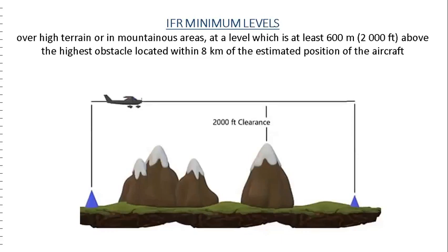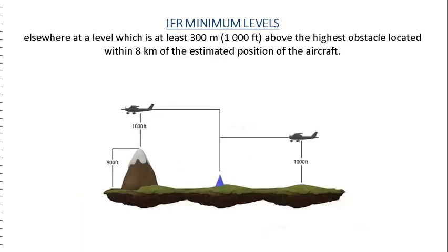IFR minimum levels over high terrain or in mountainous areas require flying at a level which is at least 2,000 feet above the highest obstacle located within 8 kilometers of the estimated position of the aircraft.